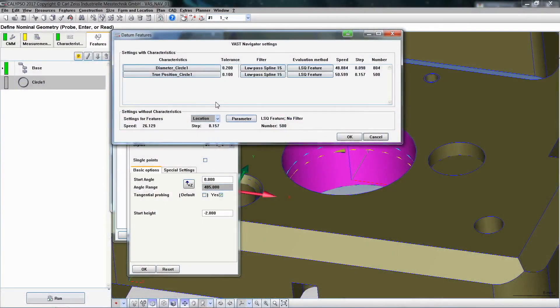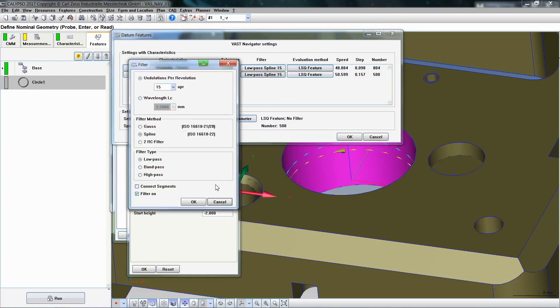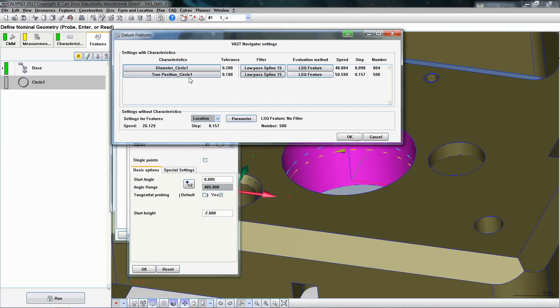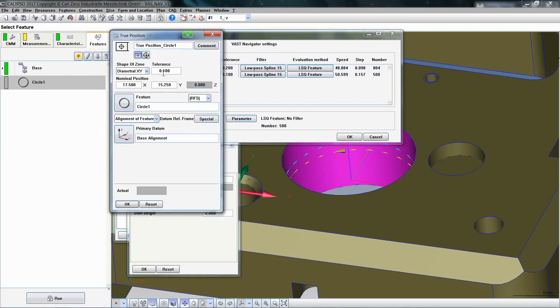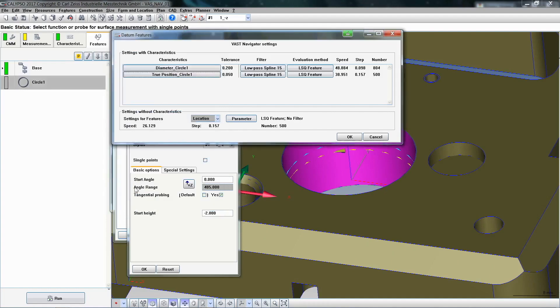Furthermore, the number of points and the filter being used are set automatically. The parameters required for this are the accuracy requirements, in other words, the tolerance of the characteristic, the diameter of the feature, and the weight of the stylus system, and the rigidity of the stylus system.